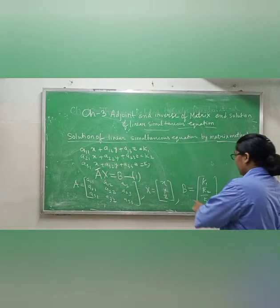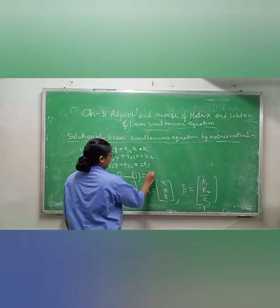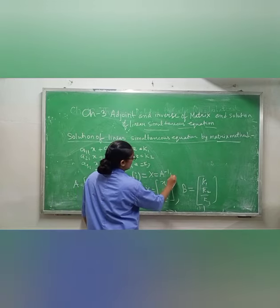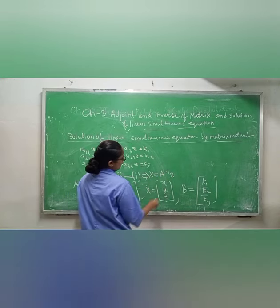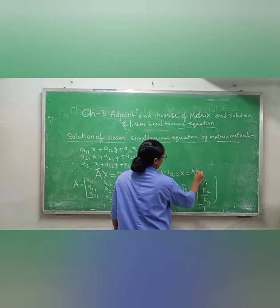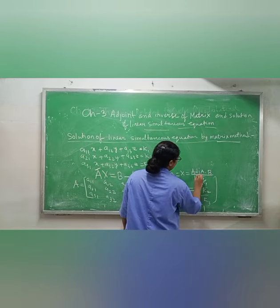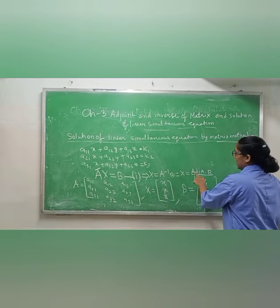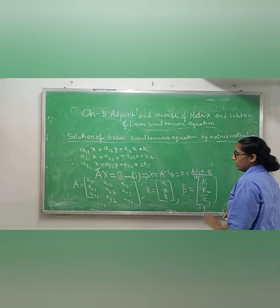From equation 1, AX = B. If A moves to the other side, X equals A inverse times B. You know the formula for A inverse: A inverse = adj(A) / det(A). So X = adj(A) / det(A) · B.